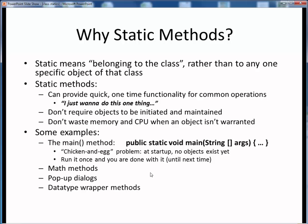Here are some other examples of where we might encounter static methods, which we'll be going over in the coming several lecture topics. For example, the methods of the math class are static methods — if we want to perform simple mathematical calculations we really don't want to have to create math objects when all we want is just a simple result. If we want to get input from a user using a pop-up dialog box, we just want to quickly throw up that dialog box, get the result, and move on without instantiating a dialog box object. And we'll soon need a way to convert from text input to numerical values using data type wrapper methods. These are all situations where static methods will come into play.